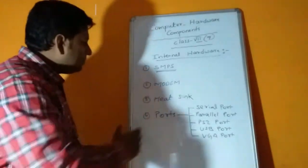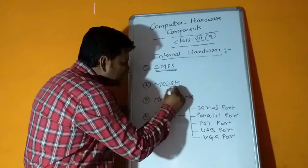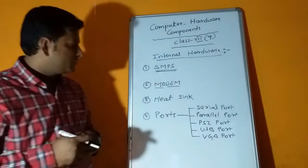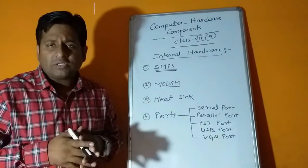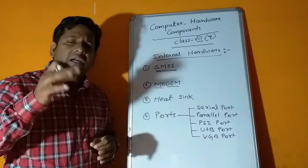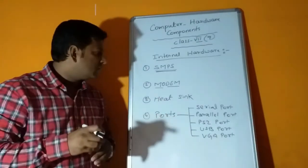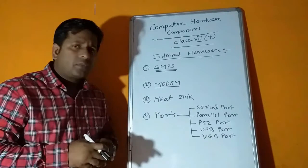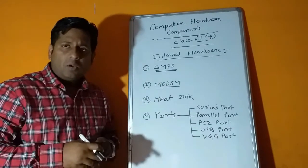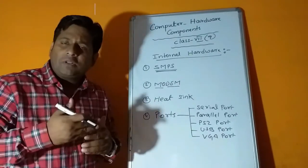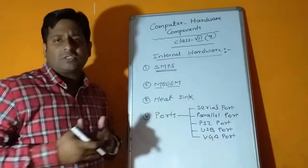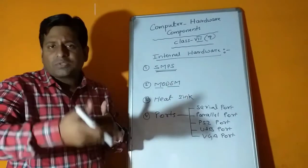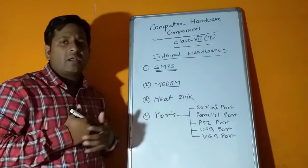Next we have modem. Modem is actually divided in two parts: MO and DEM - modulator and demodulator. Modem is used for internet connections and is required for internet. Without the modem we cannot work. Modulation and demodulation means our signal should be converted to digital signal and digital signal should be converted back.